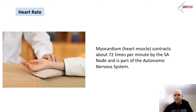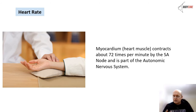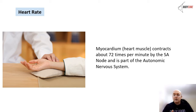The heart rate itself: the myocardium — the heart muscle — contracts on average 72 beats per minute, though it goes above and below that. It all depends on what we're doing. During physical activity, the cardiovascular system will naturally increase. If somebody is sitting on the couch, it's going to be quite decreased.